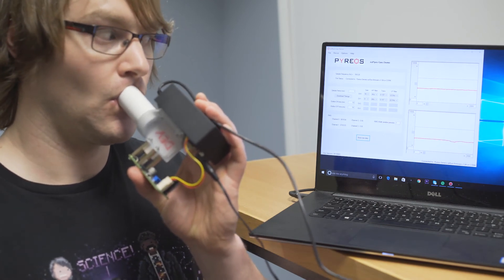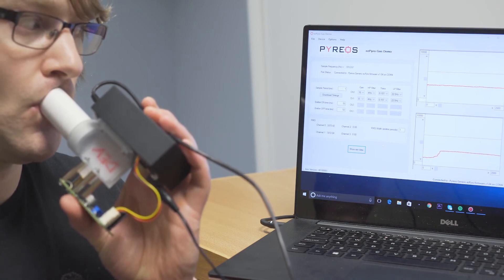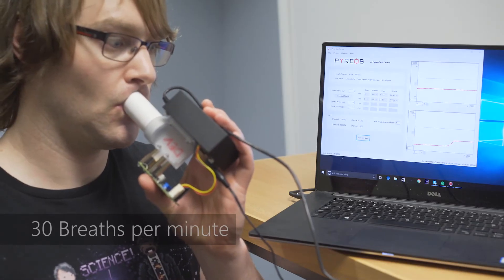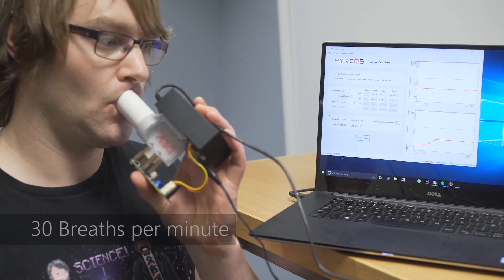As can be seen, the rise and fall of the signal is in sync with the breathing cycle of Stephen. The response of the sensor is fast enough to record the fastest breathing rates even from young children that can breathe around 90 breaths per minute.